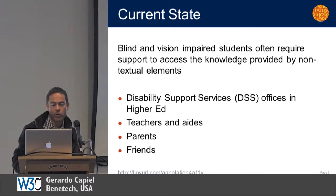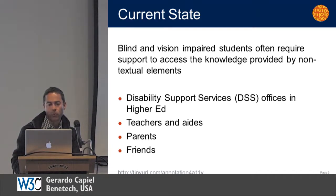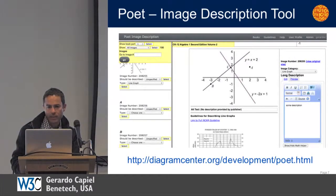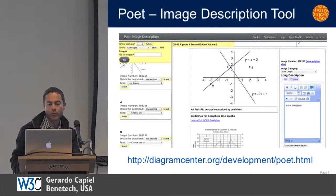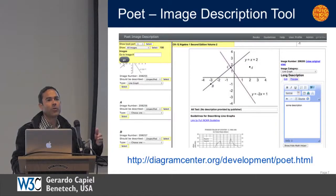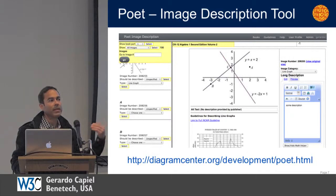The final tool I wanted to show you, to make the point that this stuff is already happening today, is a very popular tool among the blindness community called WebVisem. That allows a sighted user to annotate for a blind user an image. Once you annotate that image, any other user of this WebVisem Firefox plug-in would be able to see that description.